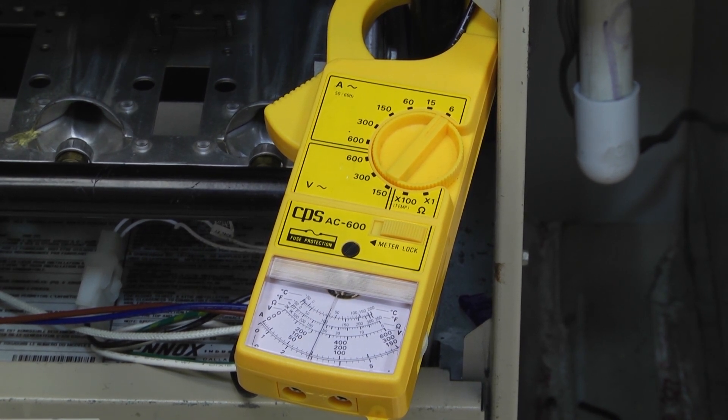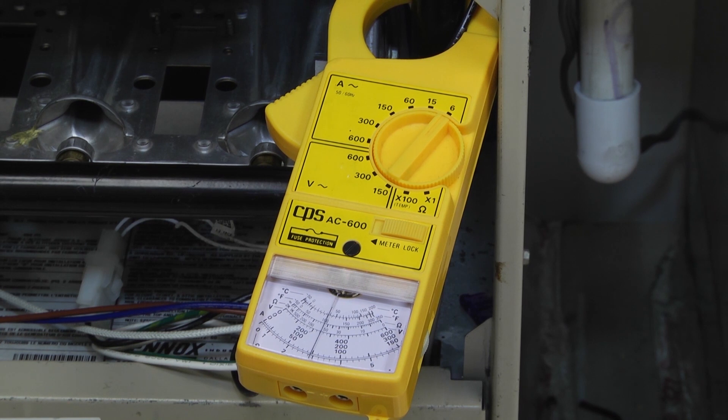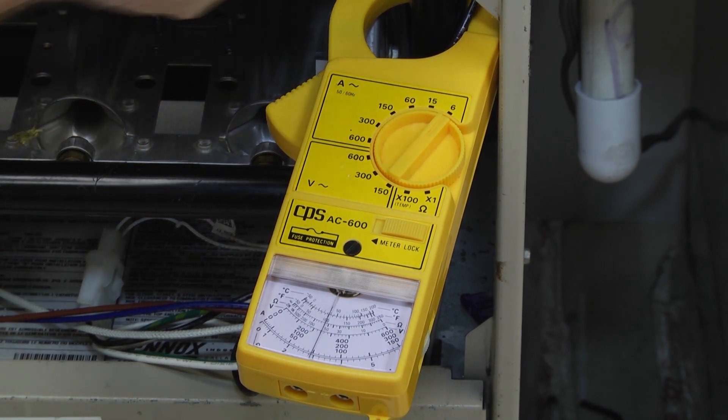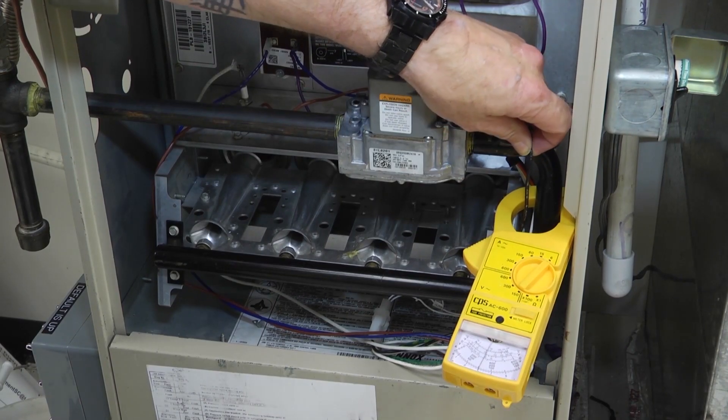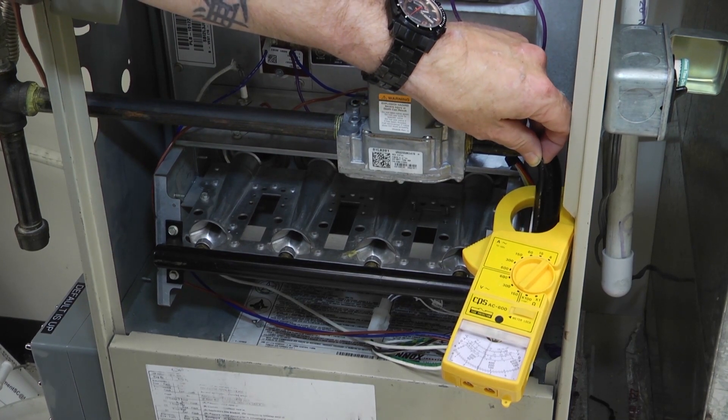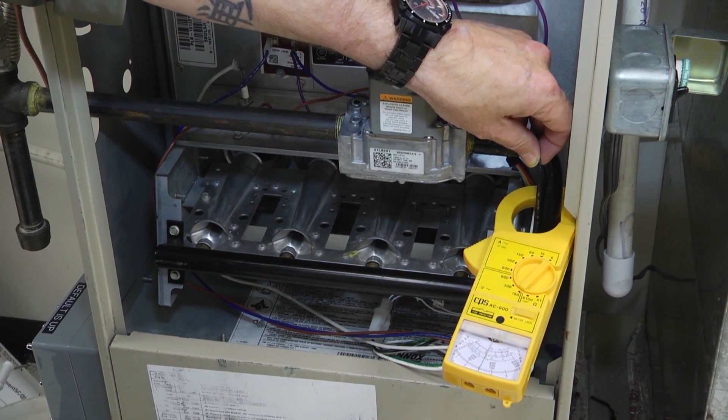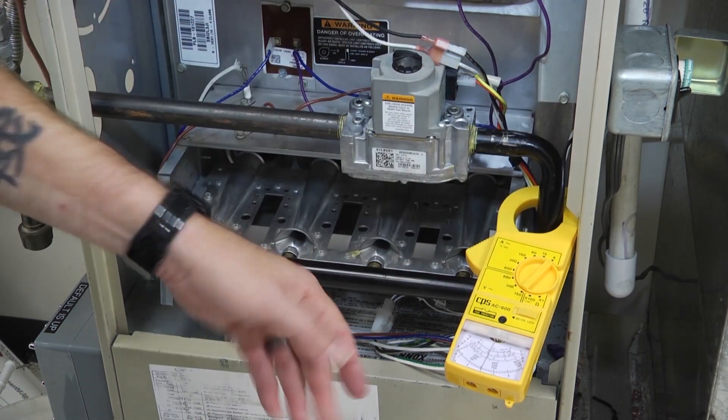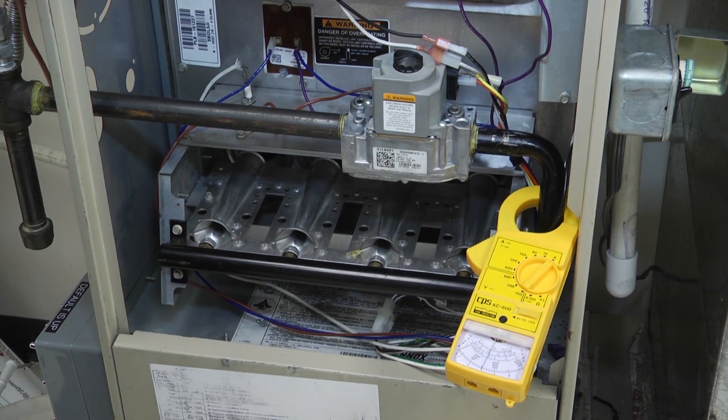We're blowing nothing but the blower. We're looking at the amp draw of the blower motor itself. This is our main power to the IFC, which right now, since it's only the blower motor that is running, is the only power that's being consumed. So right now we're running at about three amps.